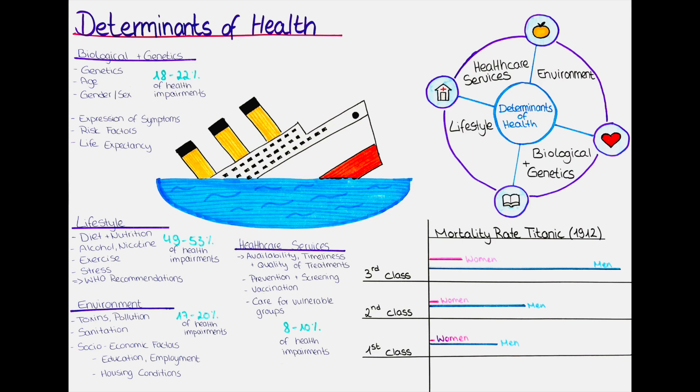Lifestyle factors are related to coronary heart disease, stroke, most neoplasms, injuries, obesity, chronic liver disease, and many more. Lifestyle factors are thought to play the greatest role in contributing to illness, with lifestyle factors determining 49 to 53% of all health impairments. Statistics show that 70 to 80% of all deaths in the developed world and 40% of all deaths in developing countries can be related to lifestyle factors.